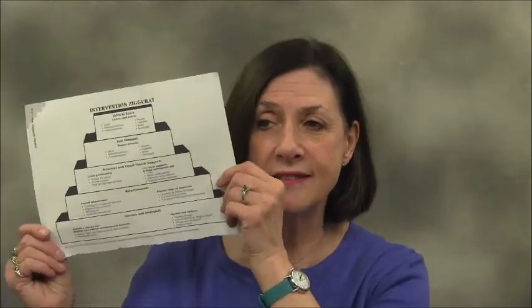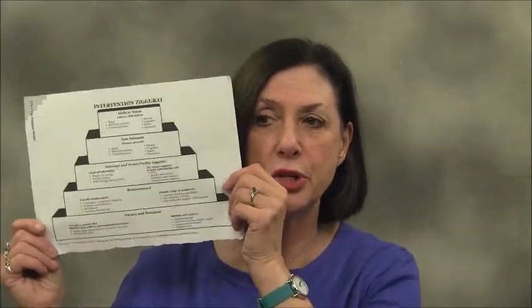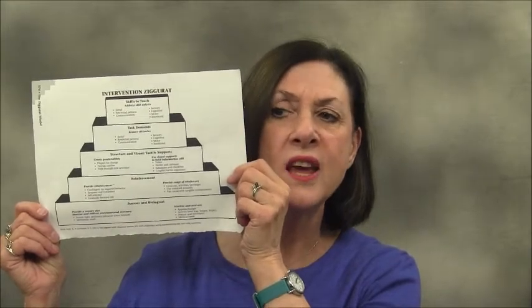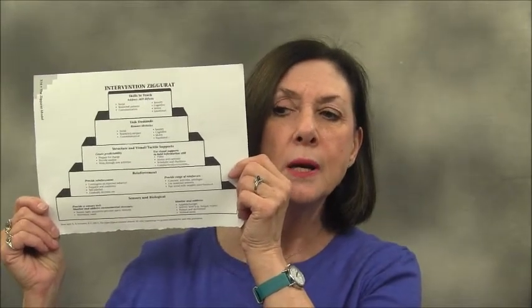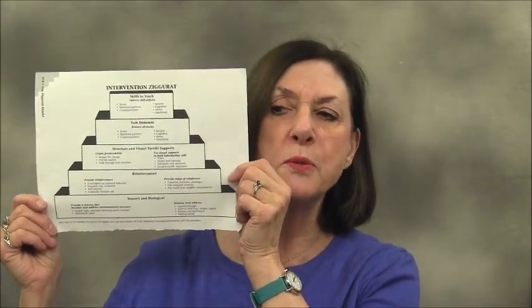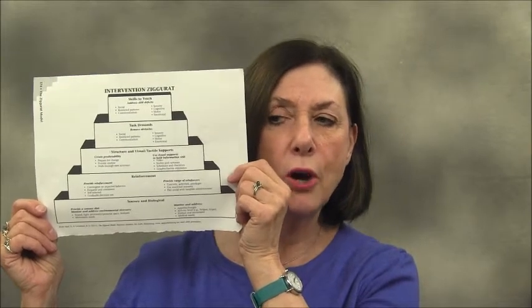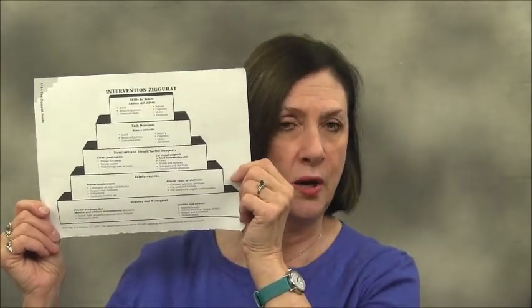The Ziggurat model has even got a great visual reminder of the programming need areas, and that's this piece of paper that I'm holding up. It shows the Ziggurat, which is a stepped pyramid — although technically it's a Ziggurat, not a pyramid. The actual Ziggurat picture is a powerful reminder of the priority hierarchy of need areas to address when planning those interventions.